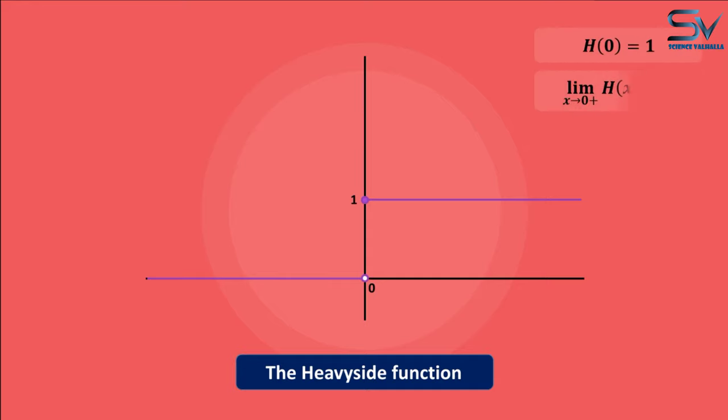This function's right limit is also 1. As a result, we can conclude that this function is right continuous.